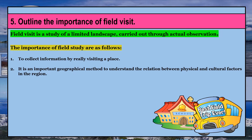Second, field visit is an important geographical method to understand the relation between physical and cultural factors. By physical factors we mean climate, soil, plants, rivers, mountains, weather, etc. By cultural factors we mean the type of house, the clothes, etc. For example, in places like Kerala or Maharashtra where the climate is hot, we find people wearing cotton clothes. The traditional dress in Maharashtra is dhoti and kurta, whereas in Kerala it is white lungi and half-sleeves shirt.